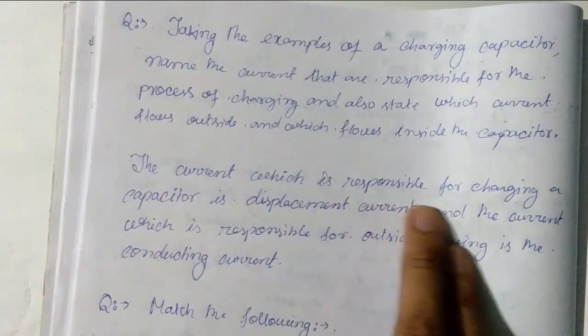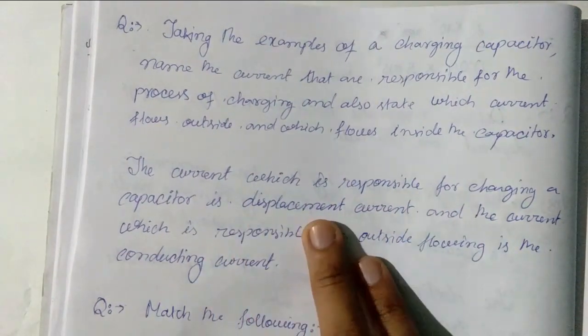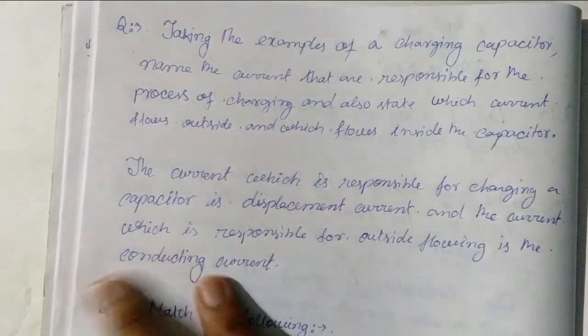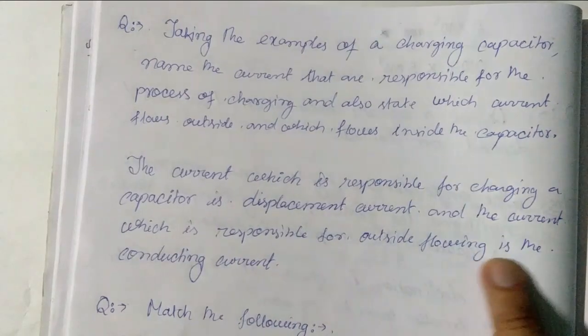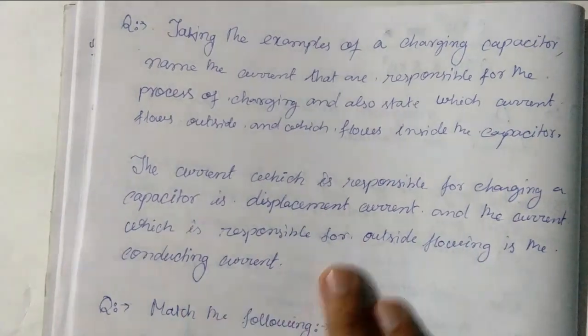The current which is responsible for charging a capacitor is displacement current and the current which is responsible for outside flow is the conducting current.